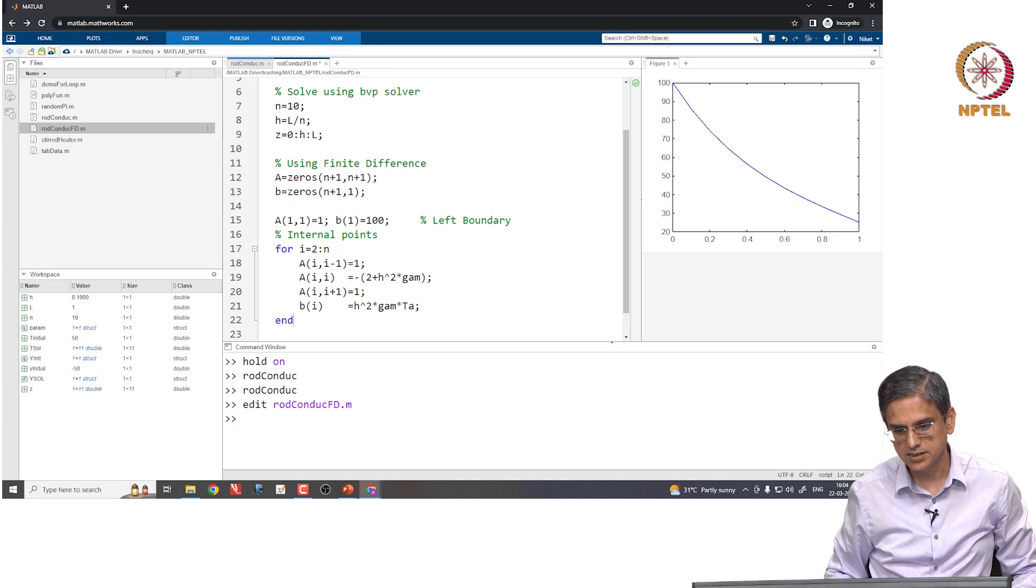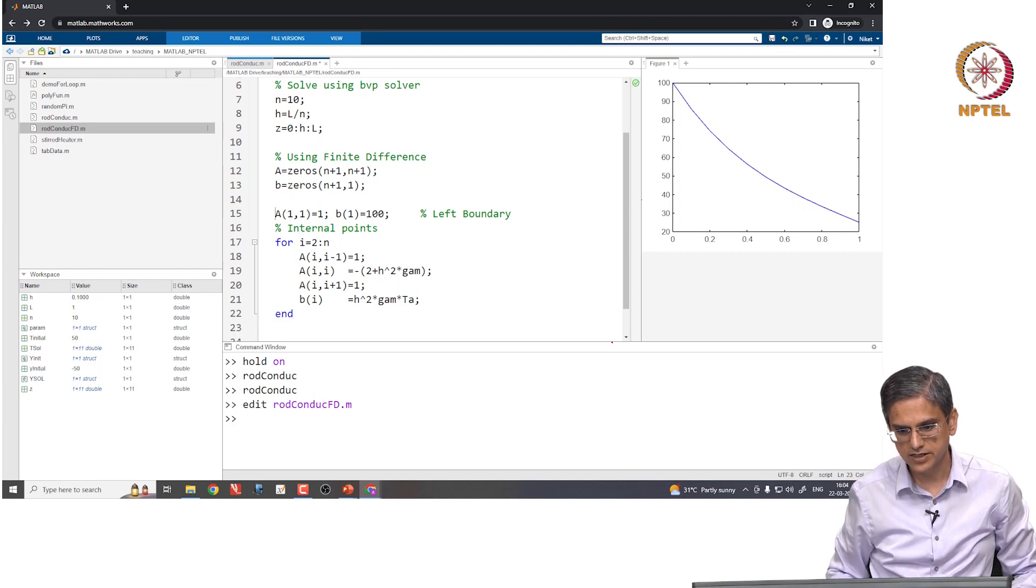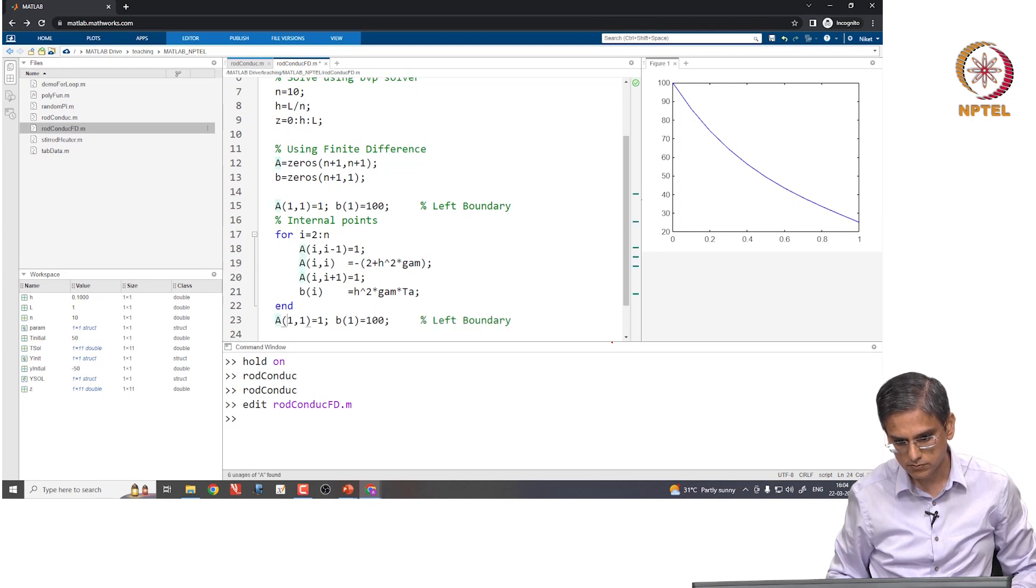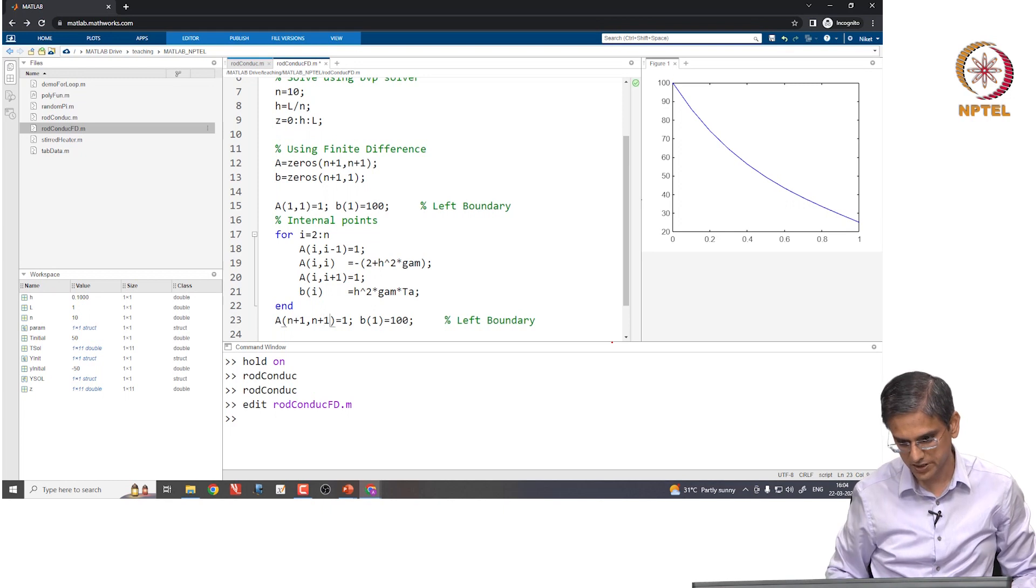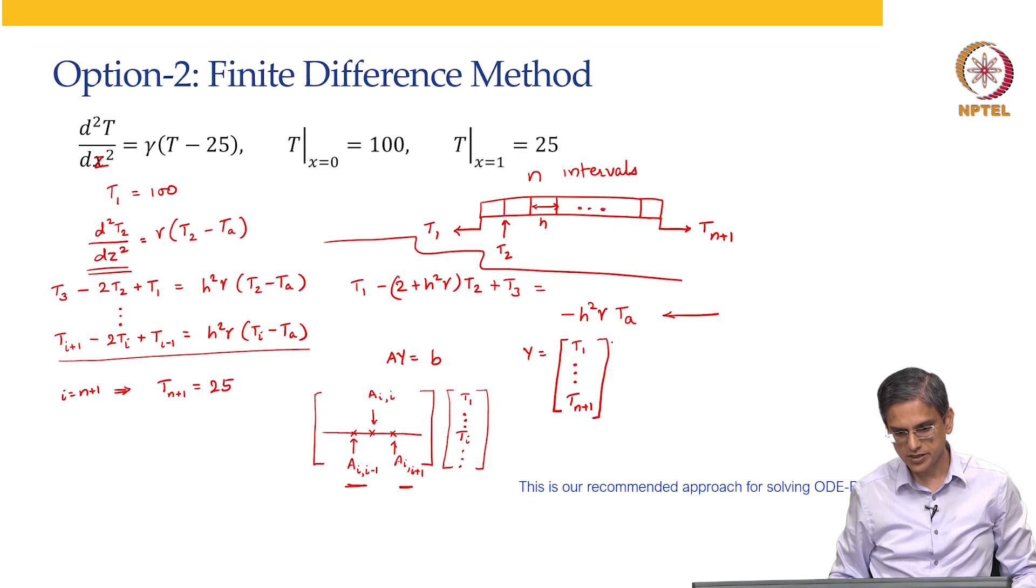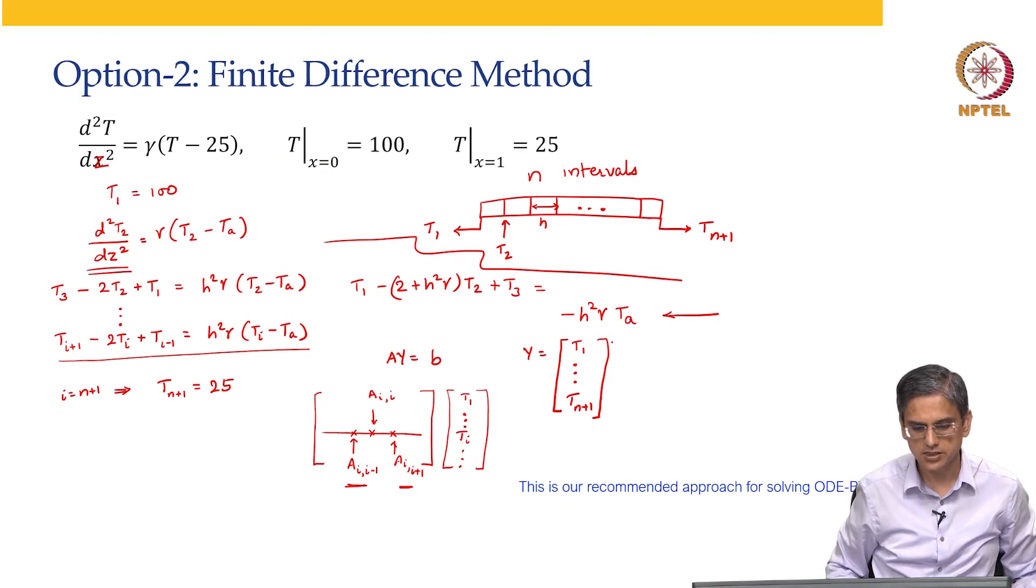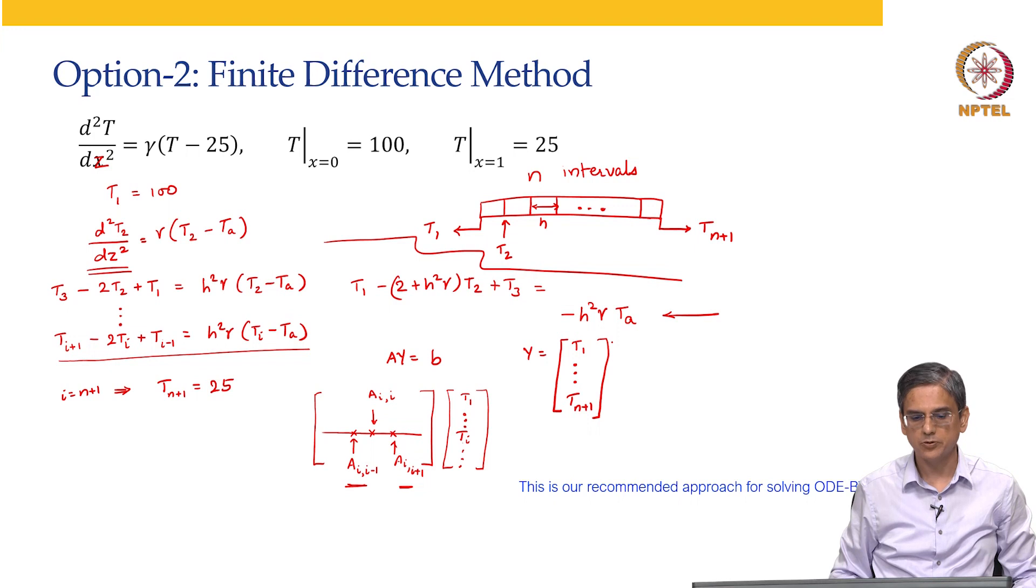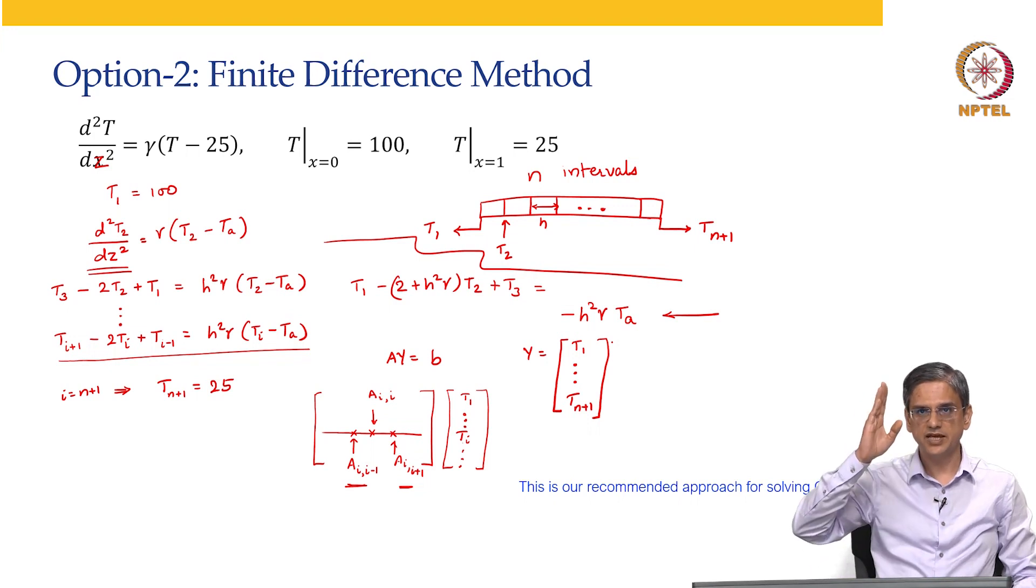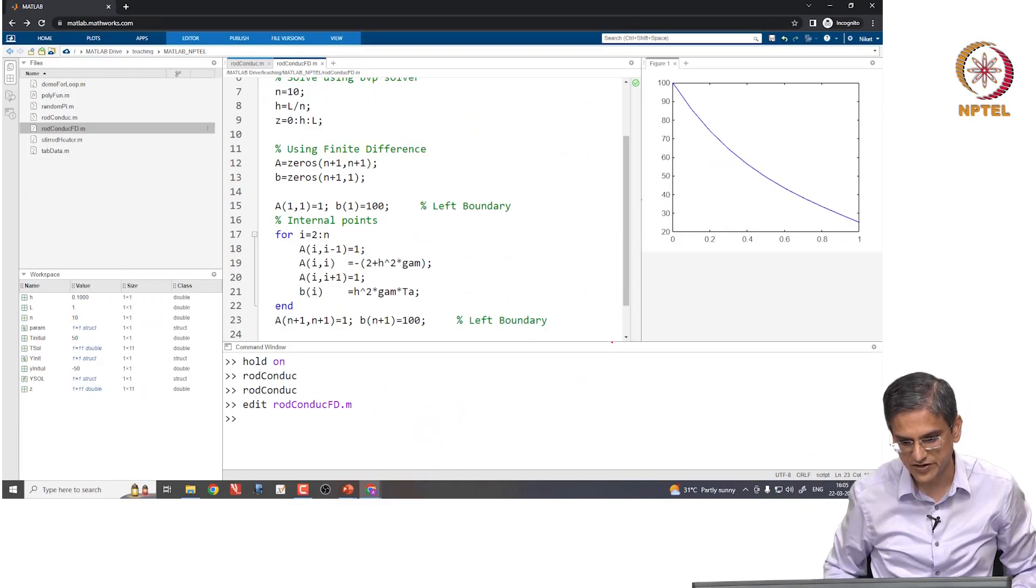And our Bi is h square gamma Ta. I will end this. And then we will have to write this for the right boundary also. And the right boundary is n plus 1, n plus 1. So, what is our right boundary condition? Right boundary condition is T n plus 1 equal to 25. So, which means A n plus 1, n plus 1 is going to be 1 and B n plus 1 is going to be 25.